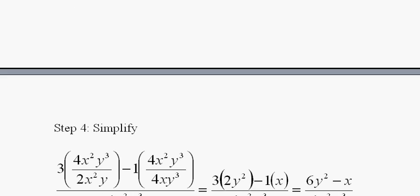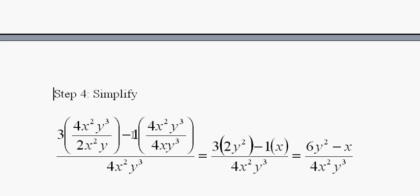And when I do that, here it is again, I get of course 2 goes into 4 two times, x squareds cancel and I have y left over, y squared left over, when I cancel the y's.